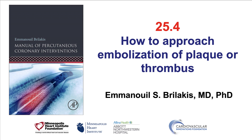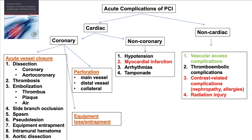This video discusses how to prevent and treat embolization of plaque or thrombus. Embolization is one of the causes of acute vessel closure, and it is important to differentiate it from another major cause, which is dissection. Dissection is treated with stent implantation, but when the cause of acute vessel closure or slow flow is embolization, the opposite is true — stent implantation can actually lead to further embolization and worsening of the vessel obstruction.